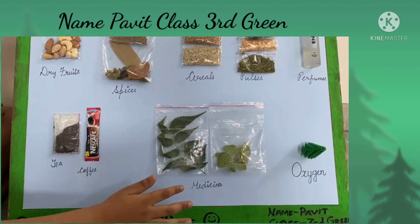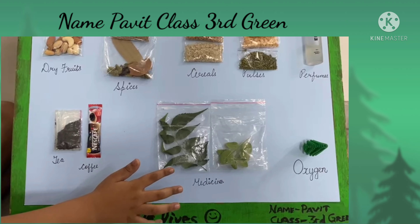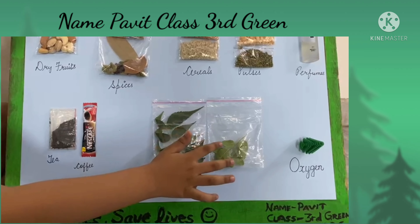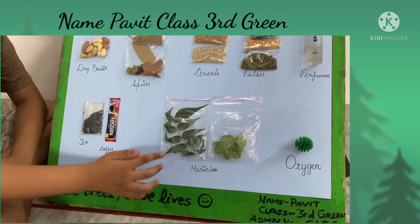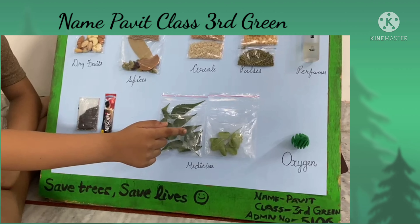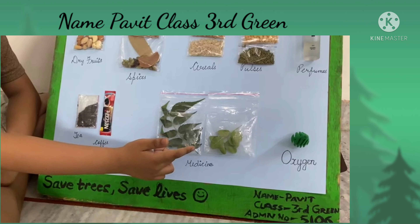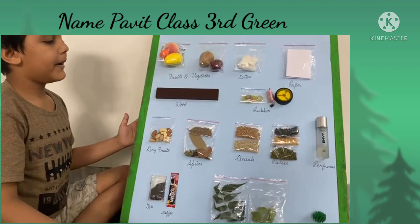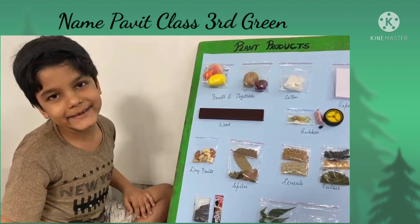First of all, we get fruits and vegetables from plants that we eat daily. Next, we get cotton from the cotton plant that is used to make clothes. We also get paper from bamboo and eucalyptus plants.